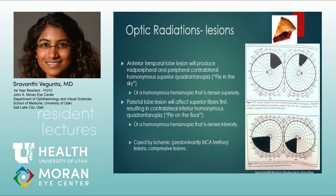Optic radiation lesions are usually caused by ischemic insults in MCA territory, though compressive lesions can also occur. Patients with these lesions may have defects that appear nearly homonymous but are denser superiorly for temporal lobe lesions or denser inferiorly for parietal lobe lesions.